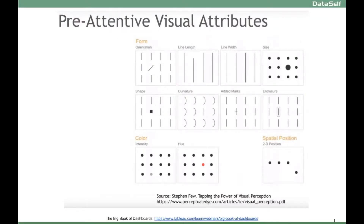If you use different forms — shapes, colors, position — the brain will very quickly get to the point of what you're trying to convey. So when you're building reports and dashboards, depending on what you're trying to do, you should maximize these pre-attentive visual attributes because they'll help your users get to the point of your reporting dashboard very quickly. Pre-attentive is one of the most important concepts you should know when building your visualizations.